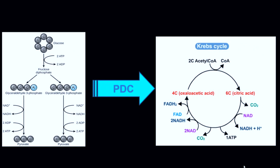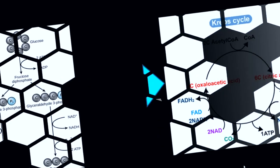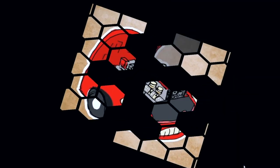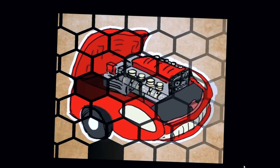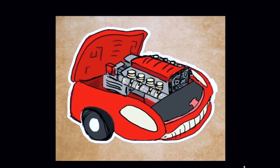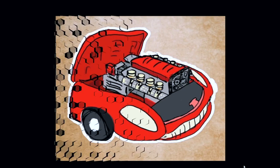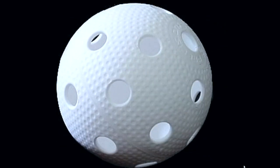So what does it do? Well, the PDC connects two metabolic processes and creates important molecules that are necessary for our bodies to function. It works like a car engine — just as a car is given gas, the PDC is given fuel from the food that we eat to run our bodies.